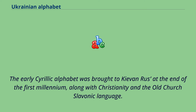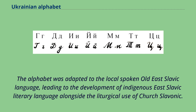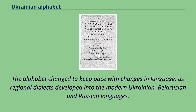The early Cyrillic alphabet was brought to Kievan Rus at the end of the first millennium, along with Christianity, in the Old Church Slavonic language. The alphabet was adapted to the local spoken Old East Slavic language, leading to the development of an indigenous East Slavic literary language alongside the liturgical use of Church Slavonic. The alphabet changed to keep pace with changes in the language as regional dialects developed into the modern Ukrainian, Belarusian, and Russian languages.